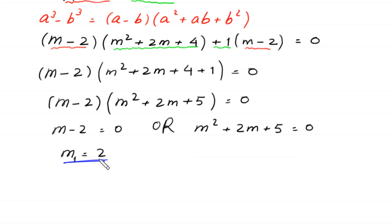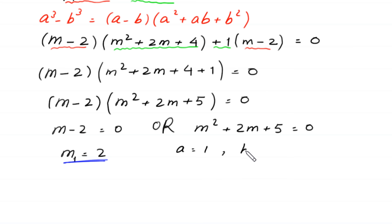Now, to find the other two values of m, we solve this quadratic equation. This is not factorable, so we solve it by the quadratic formula. In this equation, a is equal to 1, b is equal to 2, and c is equal to 5.